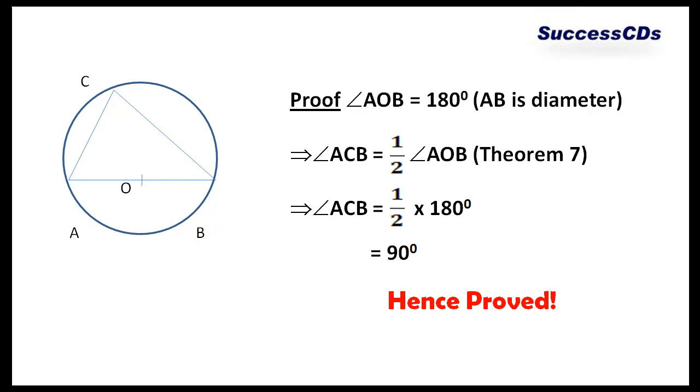Angle ACB is also drawn on the same arc AB, therefore this angle will be half of the angle subtended at the center. Angle ACB becomes half of angle AOB by theorem number 7. Angle ACB thus is equal to half of 180 degrees, thus it is proved angle ACB or angle in a semicircle is a right angle.